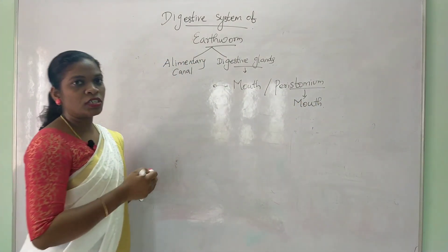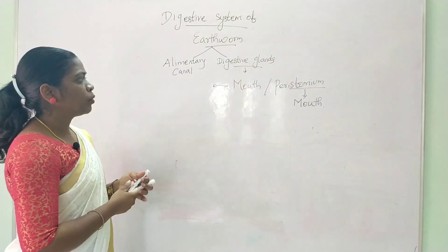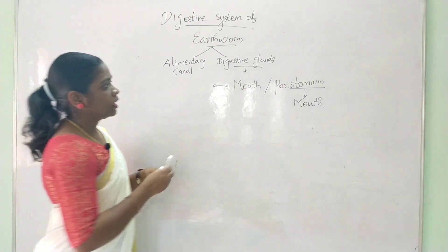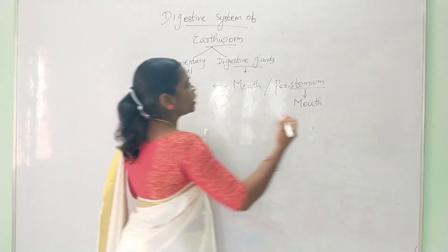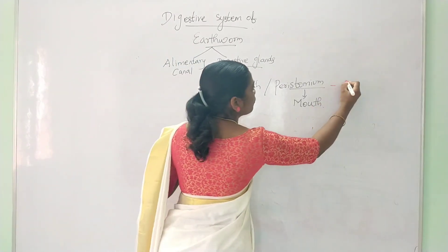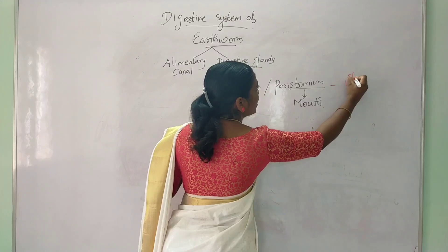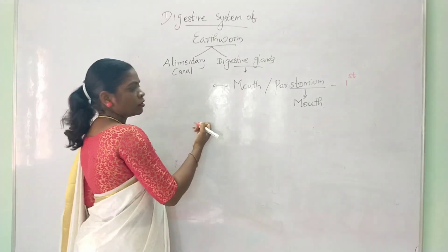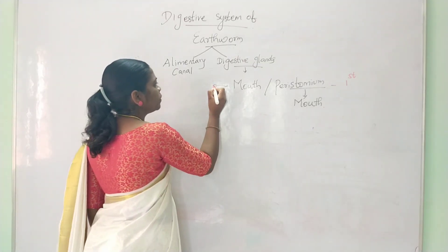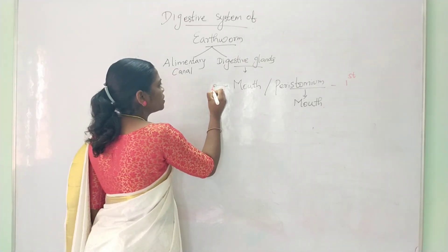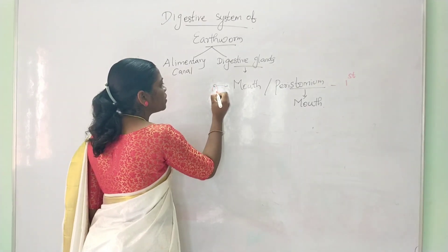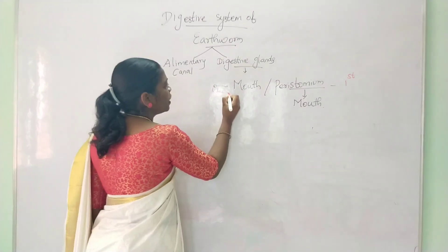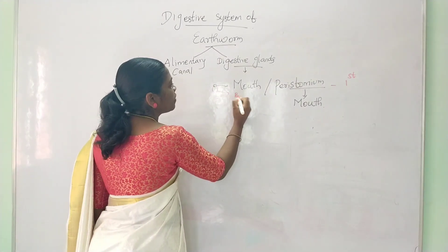The first structure present is the mouth, located at the end of the first segment of the organism. Followed by the mouth is a wider chamber called the Buccal cavity.